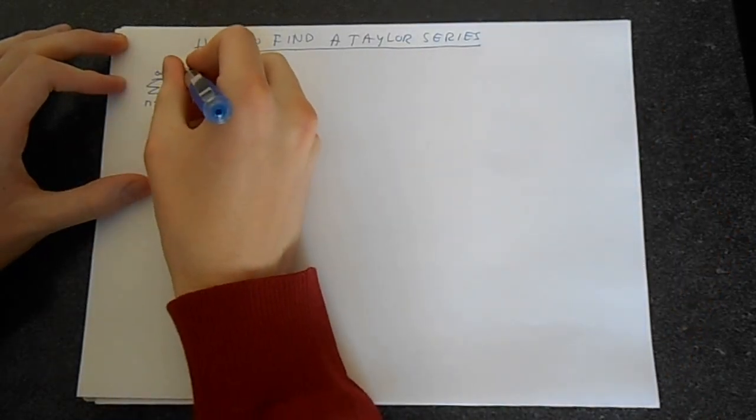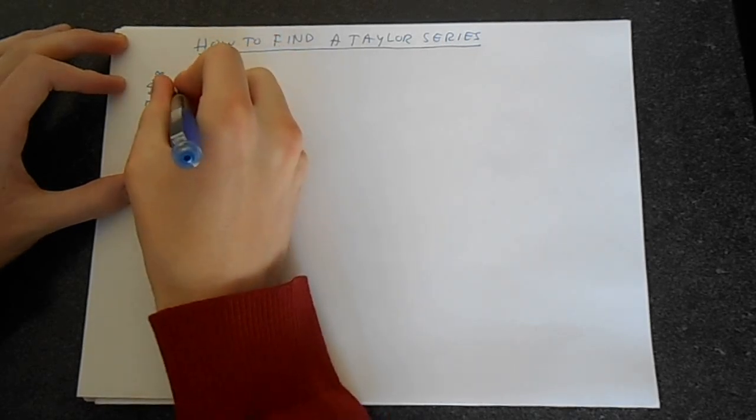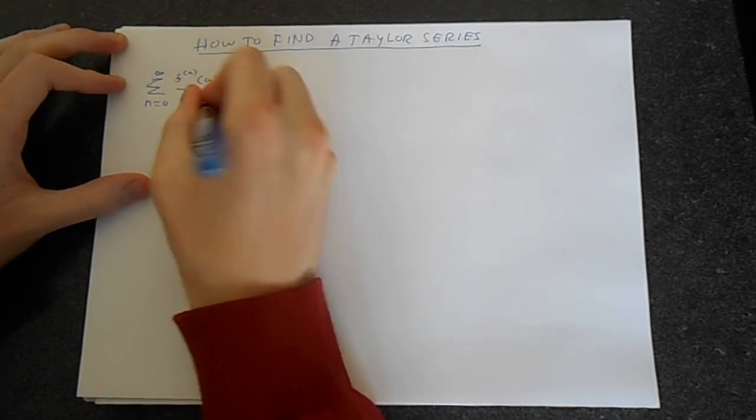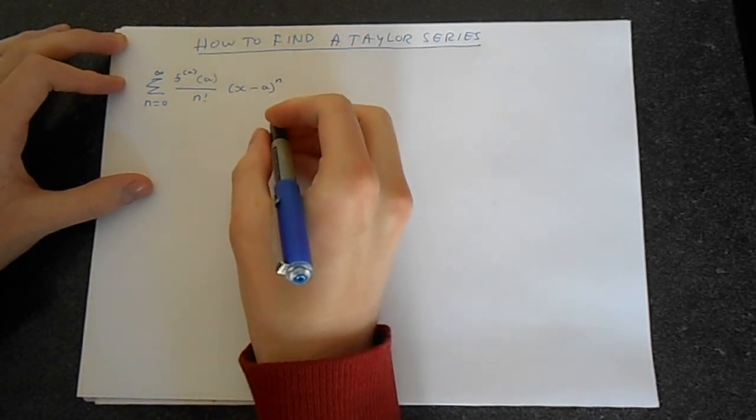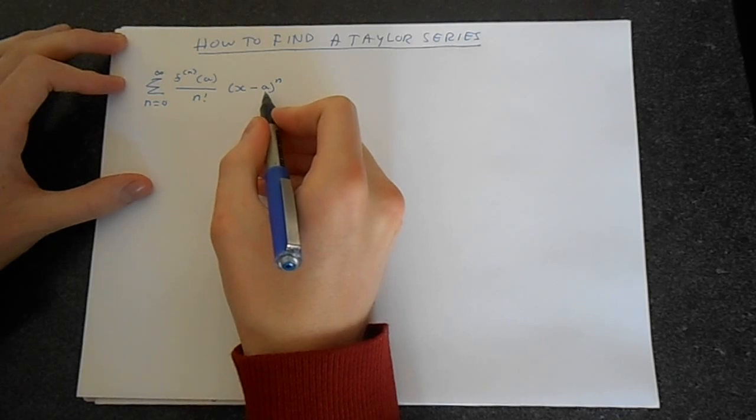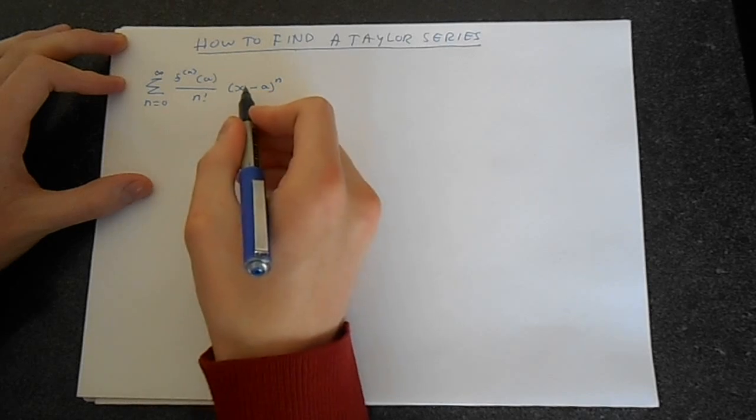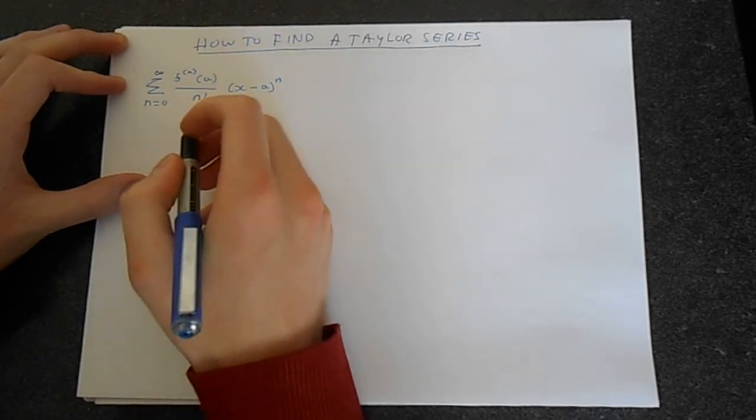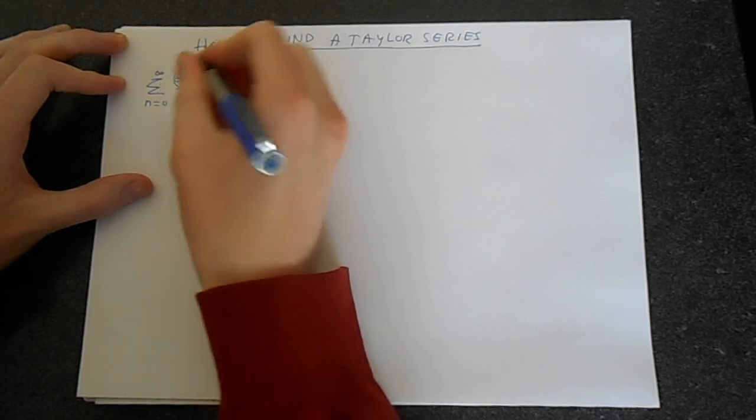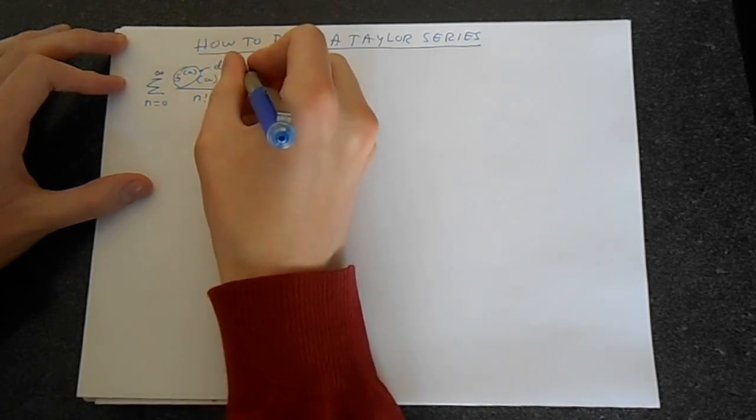It's f of n of a over n factorial times x minus a to the power n. We talk about a as the point which the Taylor series is centered at, or we call it the expansion point. This could be 1, or in the case of the Maclaurin series, this would be 0. This is the derivative order.